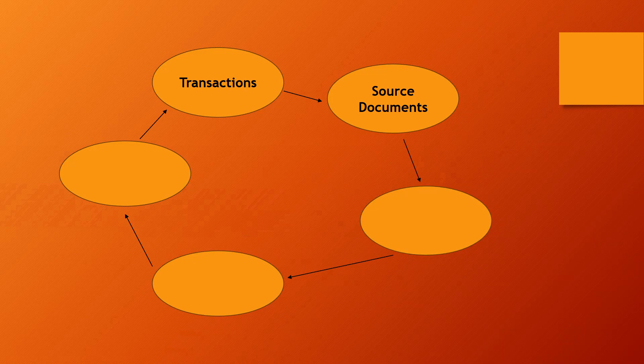Each source document is recorded in a different book. The first book of entry — from the source documents you take it to journals. For example, EFT is a payment, so money went out of the business, so it will go to the cash payments journal. And a receipt showing money came in — like the capital — will go to the cash receipts journal.